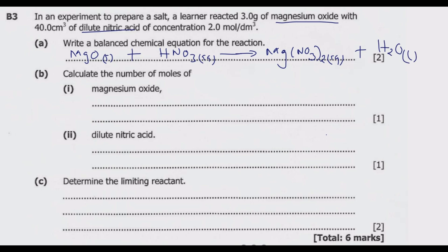The next step is to balance the chemical equation. Start with magnesium — we have one on each side, so magnesium is balanced. We look at oxygen: we have one plus the three in nitrate which is four on the left, and on the right side we have two times three which is six, plus one, which is seven. So we introduce a coefficient of two in front of HNO₃, giving us six plus one which is seven.